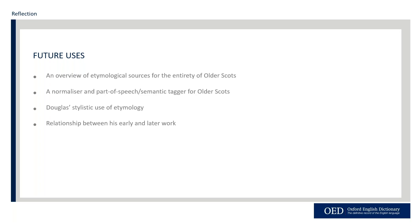That being said, there is still a lot of value in the research this kind of tool can produce. On the linguistic end, this tool could help provide an overview of the etymological sources for older Scots — work already begun by Carolyn McAfee and Alan Anderson in 1997 through a manual sample of the Dictionary of the Older Scottish Tongue, which this tool could help update. The data from normalization and tagging could also potentially be used to make an automatic normalizer and tagger specifically for older Scots. On the literary side, this tool could help indicate whether Douglas's use of etymology is stylistically conditioned — for example, whether his use of Latin is confined to aureate passages. This tool could also be used to examine all the other Scottish Makars and would be a very useful addition to existing medieval Scots corpora like the Helsinki Corpus of Older Scots.